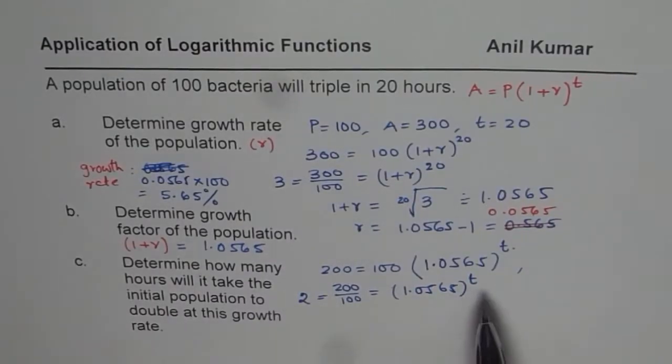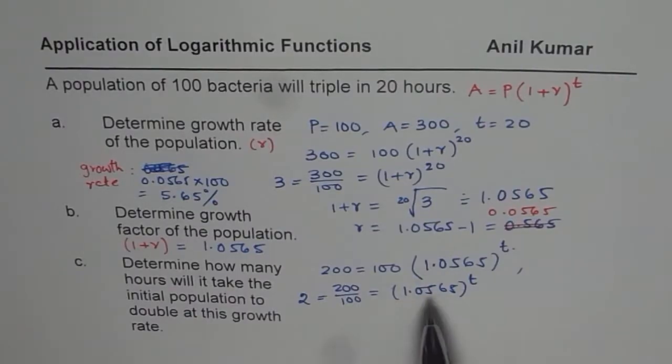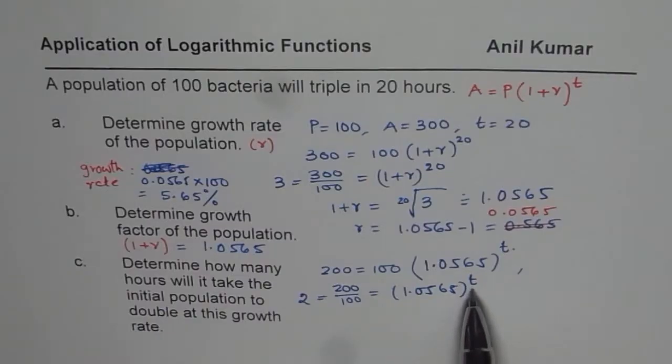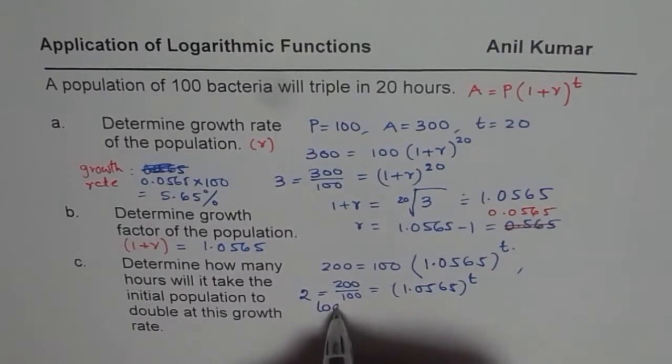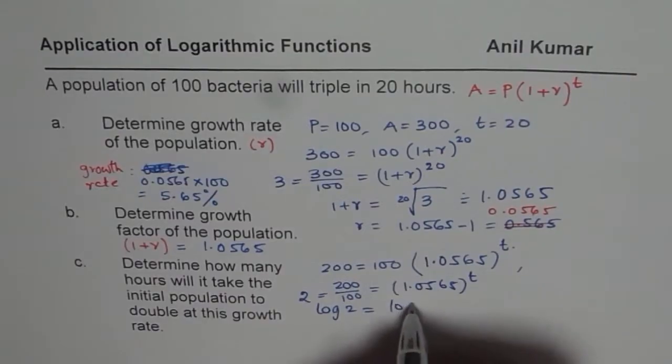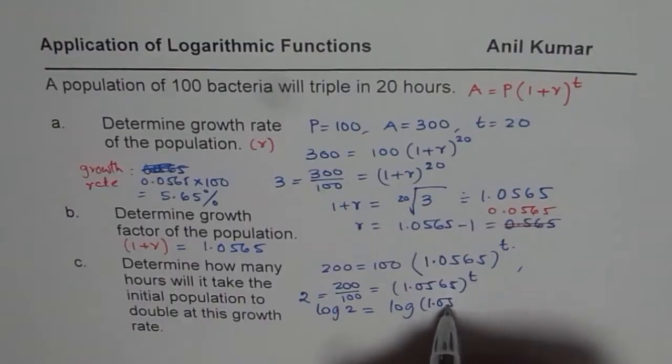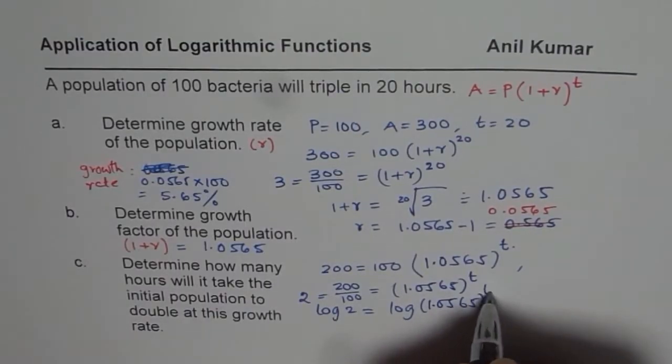Now to solve such equations, what we can do is we can estimate by estimating values of t. Let's say you just put 10, 20, and then figure out what should be the next value and converge to 2. Or you can take log. So let's take log both sides. We have log of 2 equals log of 1.0565 to the power of t.